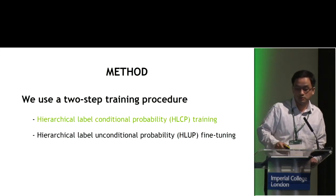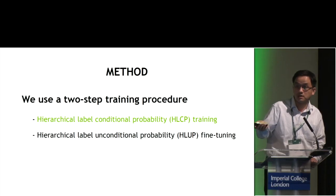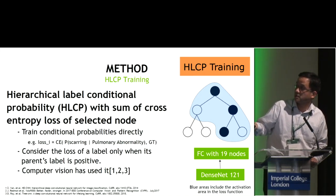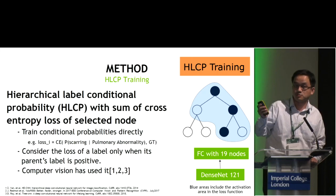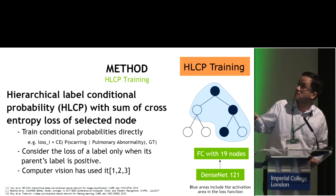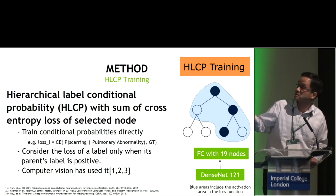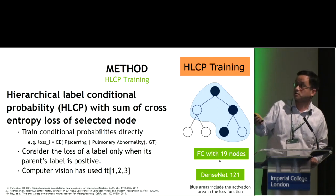We train our network using a two-step training procedure. First, we train the network with the hierarchical label conditional probability. Then we fine-tune this network with the hierarchical label unconditional probability. The backbone is the convolutional layers of DenseNet-121, with a fully connected layer of 19 nodes — each node corresponds to one node in our disease tree. For the conditional probability, we take a sum of the cross entropy only for selected nodes where the parent's label is positive.